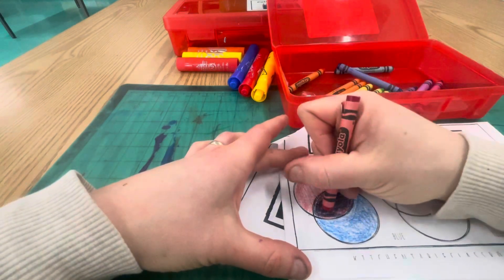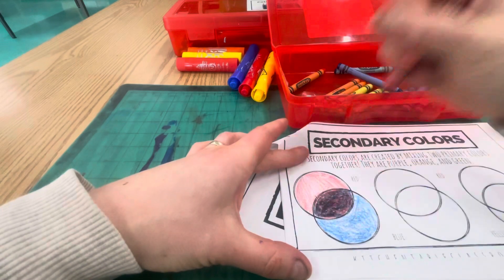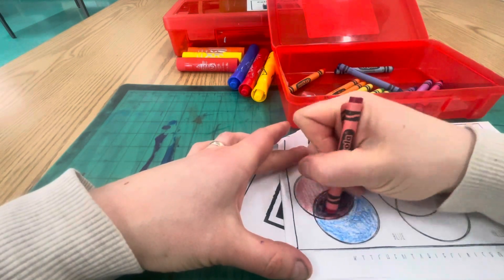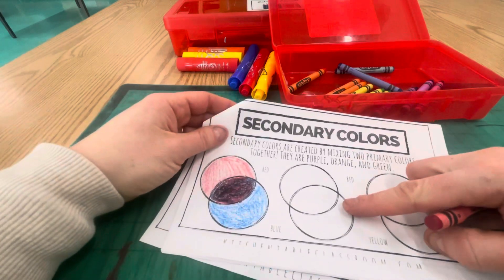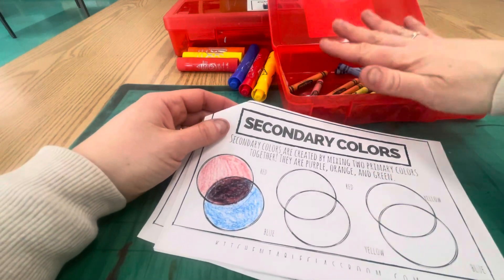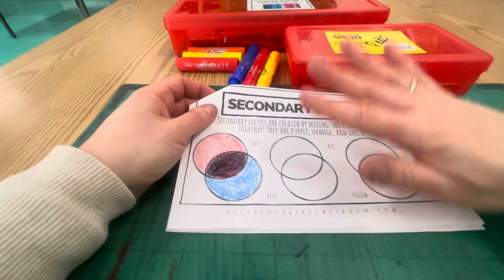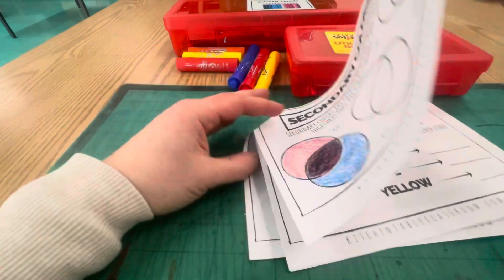Then you would go on to the next one: red plus yellow equals orange, and mix that together right there. Use crayons or colored pencils for the secondary colors when you're actually doing the mixing.